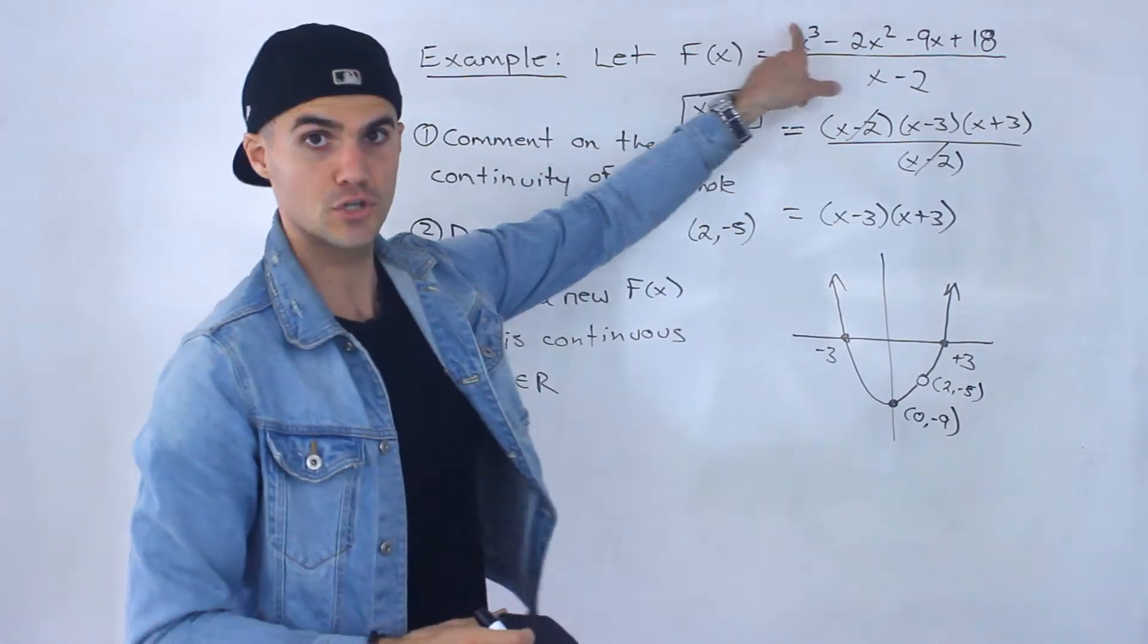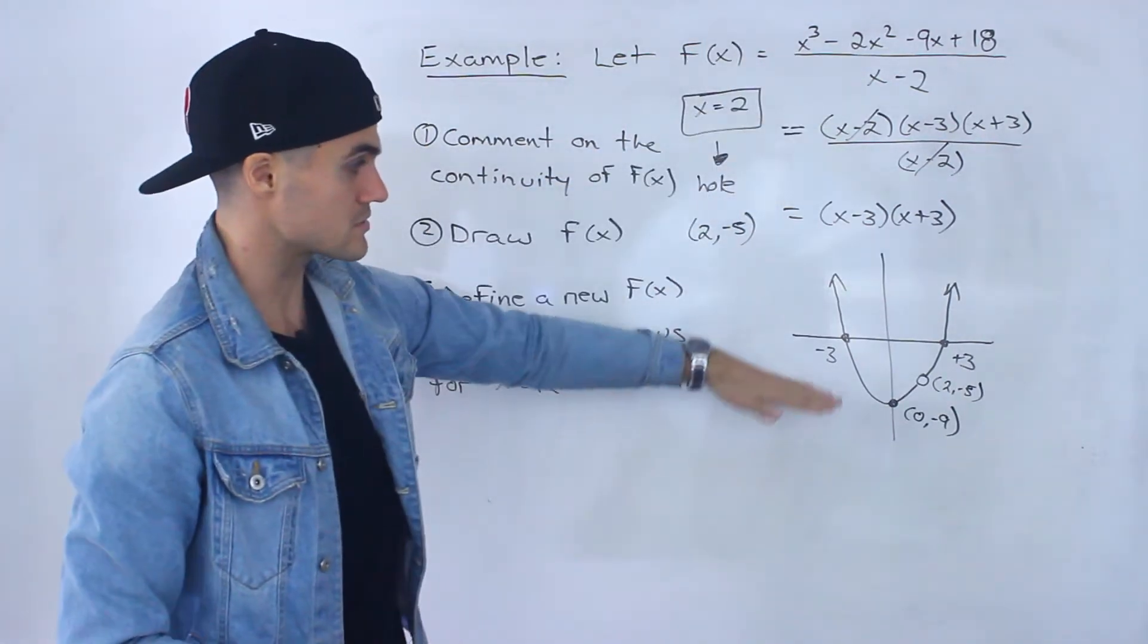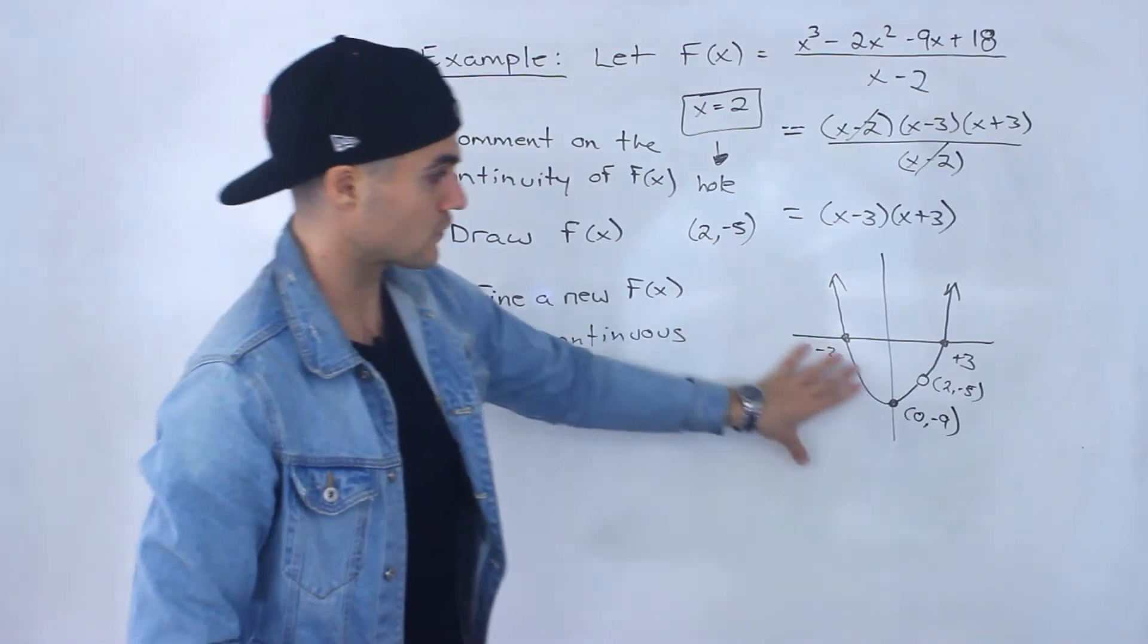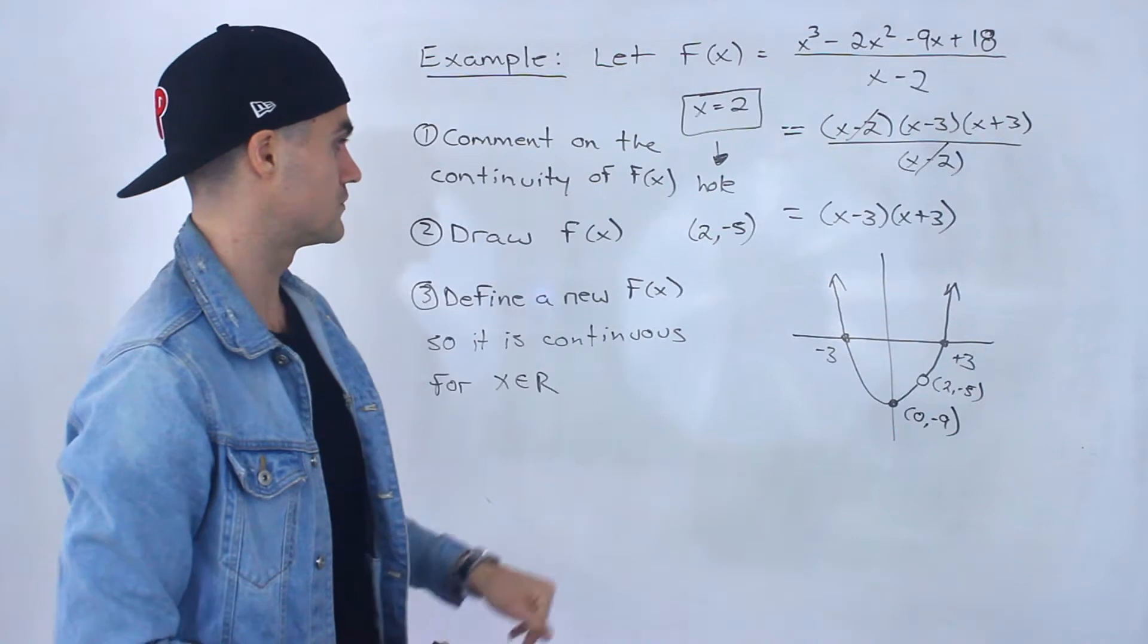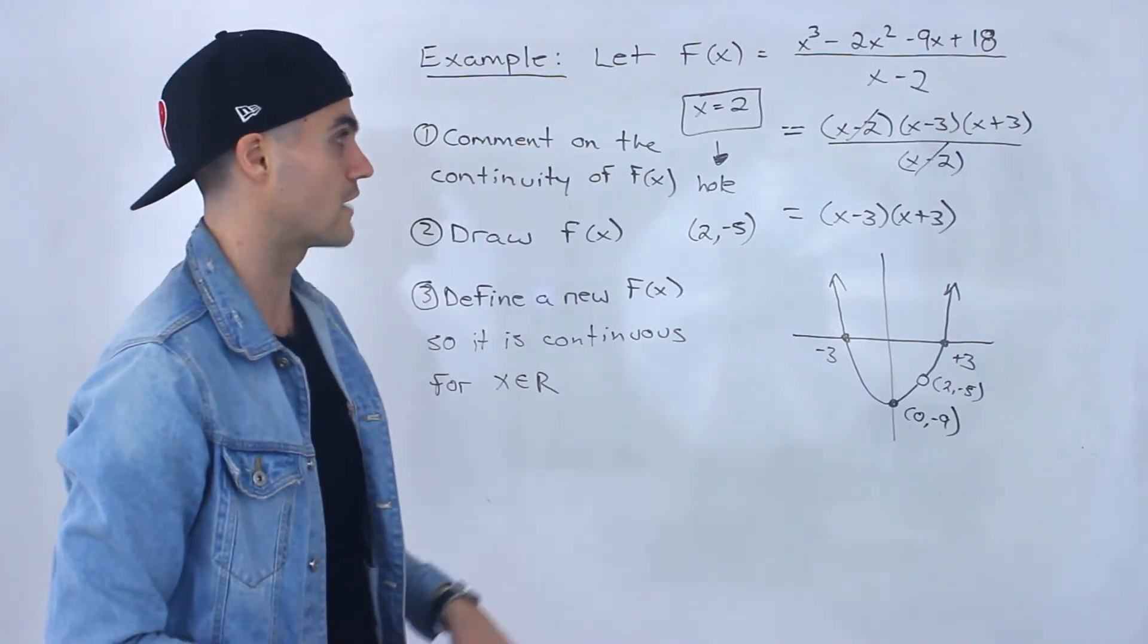So this function, if you took this function, put it into Desmos, you'd get a graph like this. So continuous for all x values except that x value of 2. And that's how the graph looks.